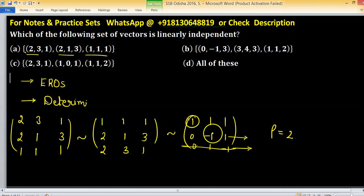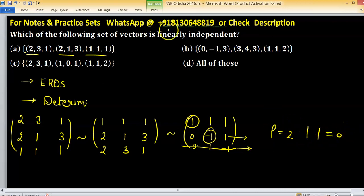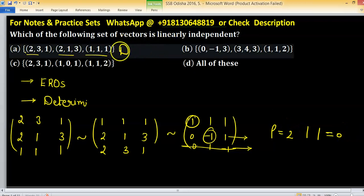Why rank is 2? Because there are two pivots. Rank is 2, implying that determinant is 0. Determinant is 0, directly telling you linearly dependent. This is dependent.